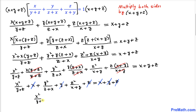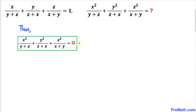So we are left with x squared divided by y plus z, plus x, plus y squared divided by z plus x, plus y, plus z squared divided by x plus y, plus z, equal to x plus y plus z. The x, y, and z on the left hand side cancel with those on the right hand side. Therefore x squared divided by y plus z, plus y squared divided by z plus x, plus z squared divided by x plus y equals zero. Thanks for watching and please don't forget to subscribe to my channel for more exciting videos!